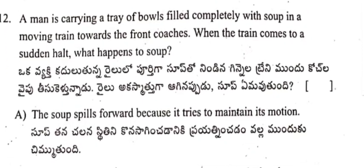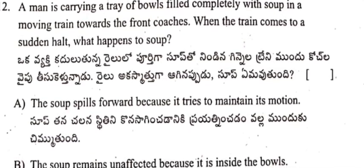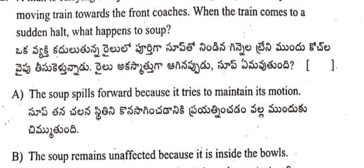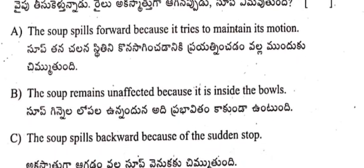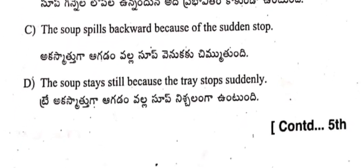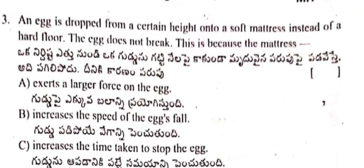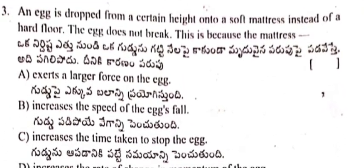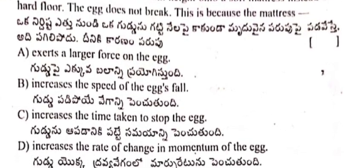Question 12: A man is carrying a tray of balls filled completely with soap in a moving train towards the front coaches. When the train comes to a sudden halt, what happens to the soap? Options A, B, C, D are given. Question 13: An egg is dropped from a certain height onto a soft mattress instead of a hard floor — the egg does not break.